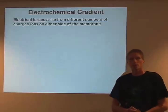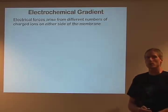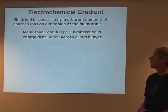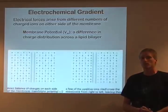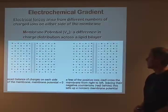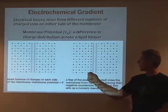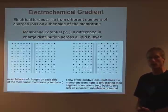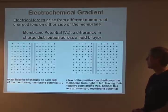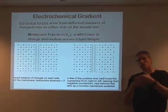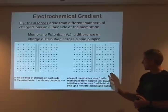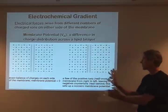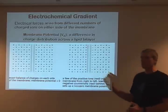Electrical forces arise from the separation of charge and concentration on one side versus another. The membrane potential is the difference in charge — it arises when you have more positive ions on one side and more negative ions on the other side of the lipid bilayer. The separation of charge creates an electrical force, which means only a small number of ions need to move to create a large electrical force, so concentrations don't appreciably change to create a membrane potential.